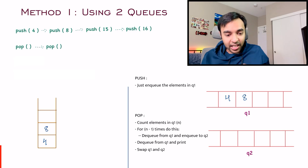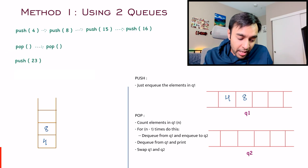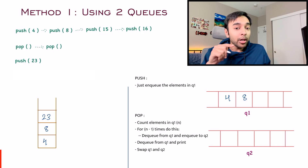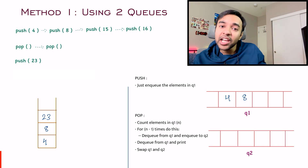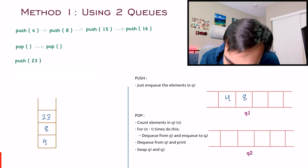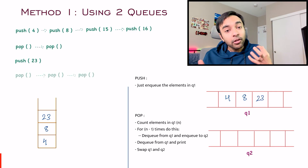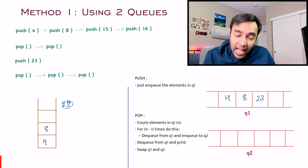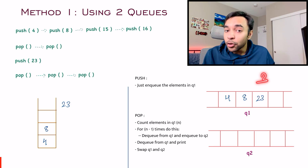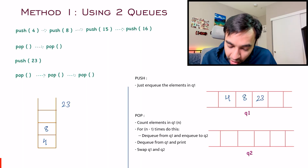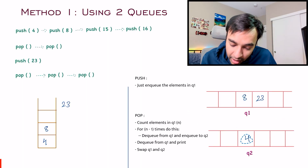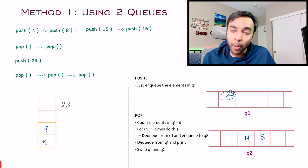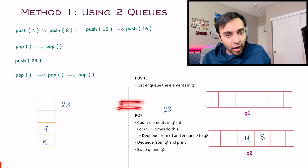Let's say the next operation is push 23. In the stack, 23 gets added on top. When pushing elements to the queue, you just push to Q1, so 23 gets added there. Now if you have to pop, from the stack you get 23. In the queue, you have three elements, so you do the reversal two times — taking out 4 and putting it in the next queue, then taking out 8 and putting it in the next queue. You're left with 23, and you pop it out. Both operations have been mimicked.